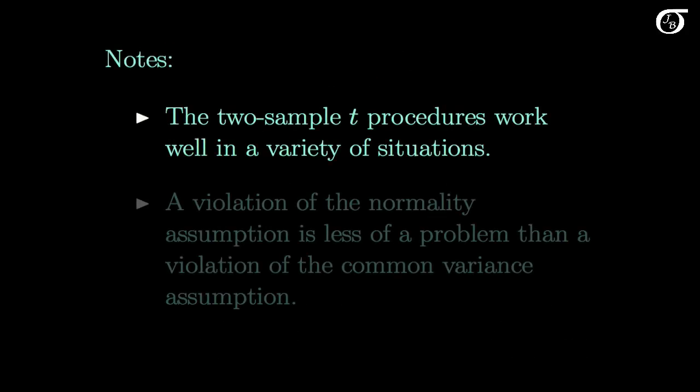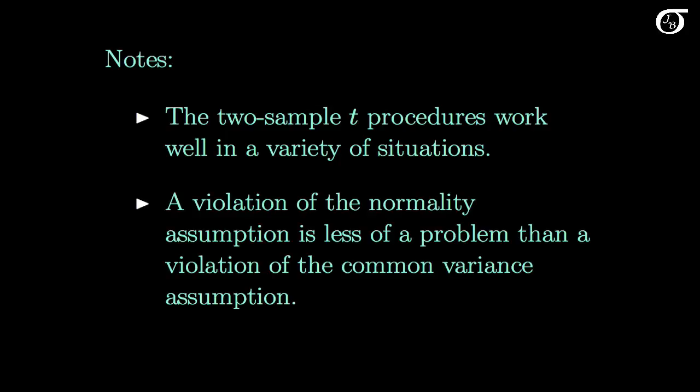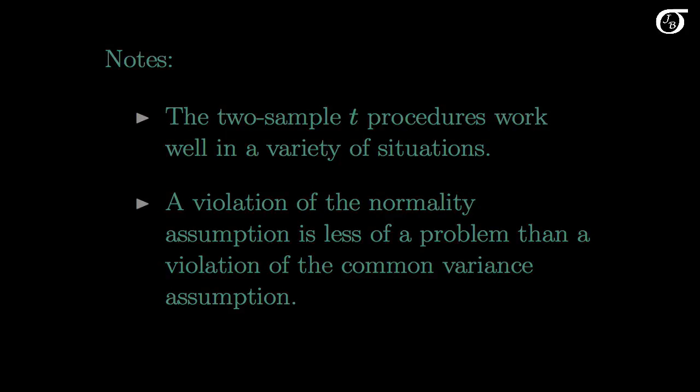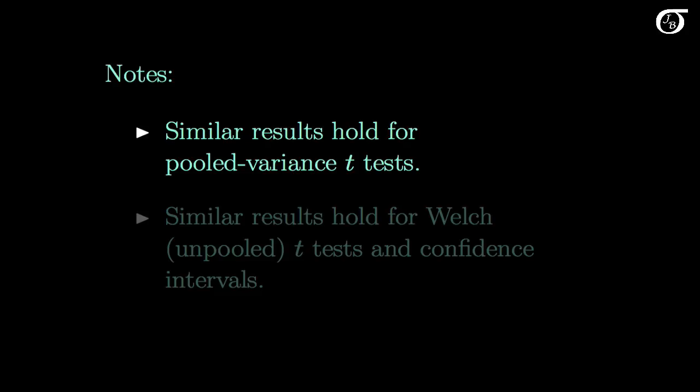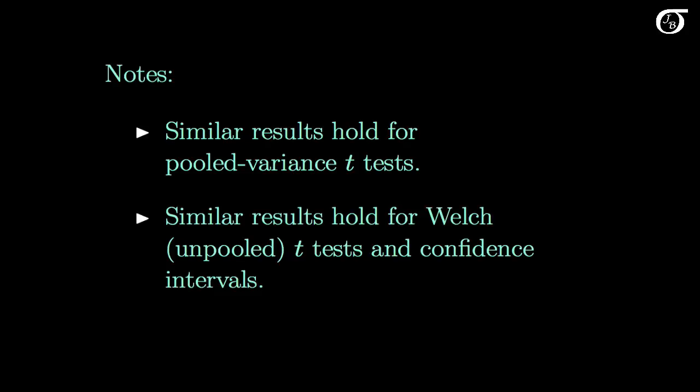Here are a few key notes. The pooled variance t procedures work well in a variety of situations. The two-sample t procedures are far more robust to violations of the normality assumption than one-sample t procedures. A violation of the normality assumption is typically much less of a problem than a violation of the common variance assumption, which can sometimes have extremely negative consequences. Because of the relationship between hypothesis tests and confidence intervals, very similar results hold for pooled variance t tests, as well as for Welch unpooled t tests and confidence intervals.